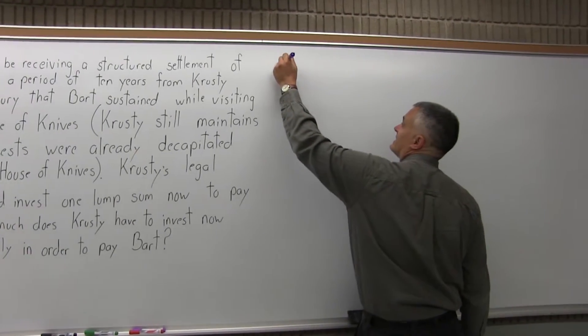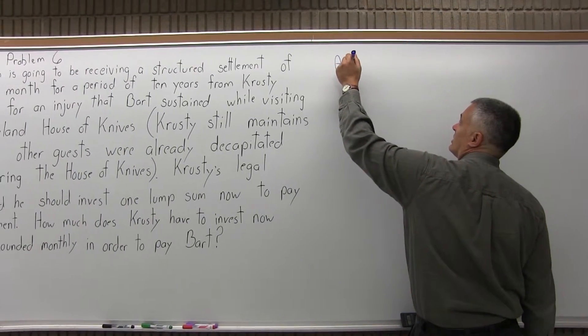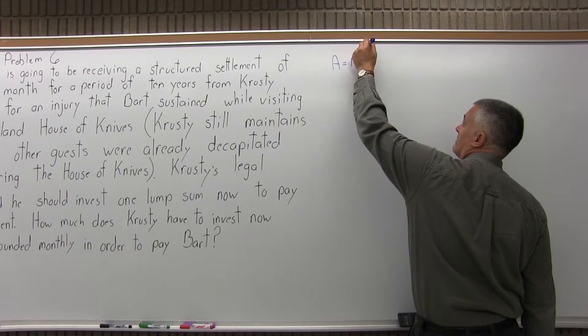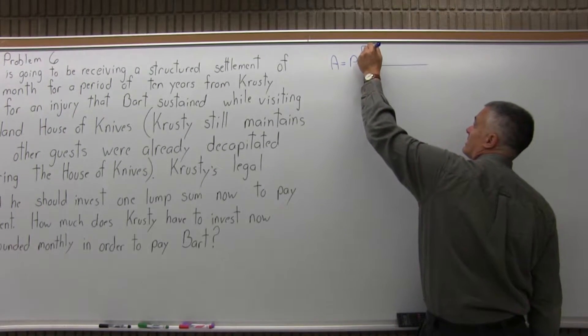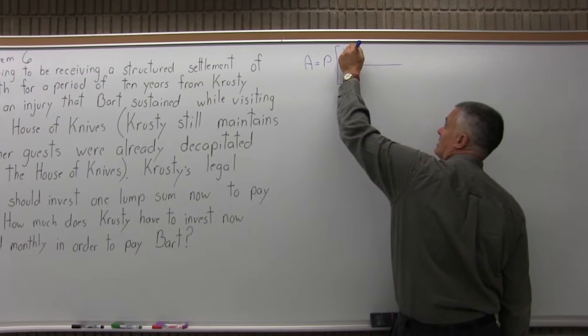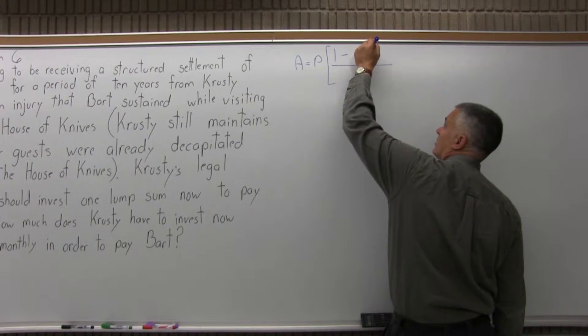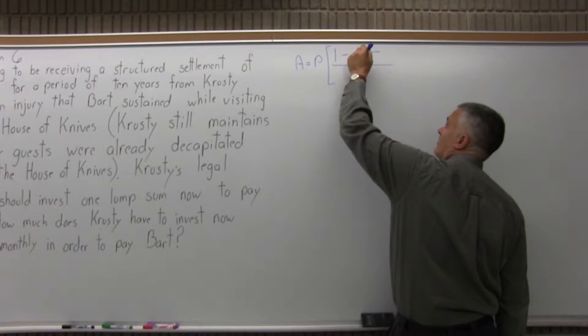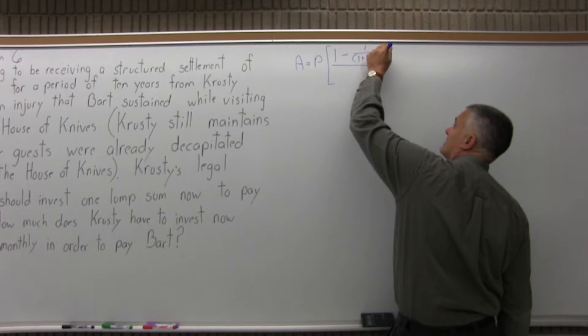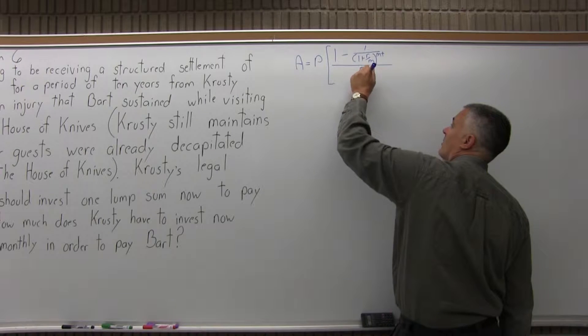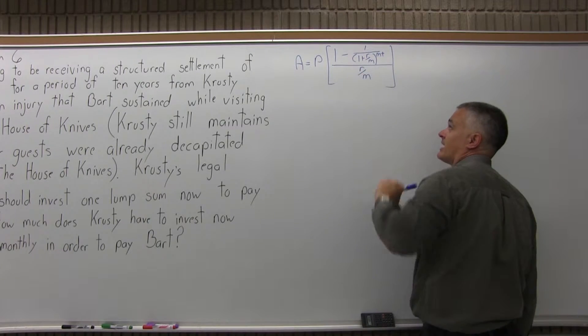And the formula for that is A, that lump sum that we're looking for, is P, the regular payment, times some fairly big brackets, which has in the numerator of the brackets, 1 minus 1 over, in parentheses, 1 plus R over M, close the parentheses, to the M times T power, divided by R over M in the denominator of the brackets.